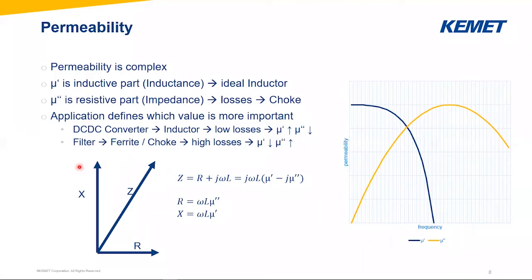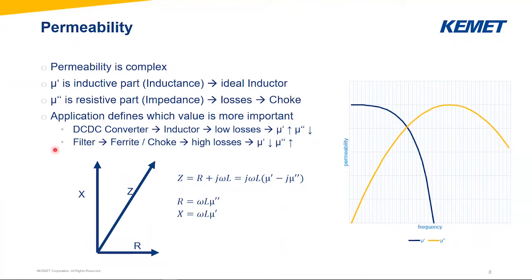This means depending on your application, you need to know your requirements. If you need a DC-DC converter inductor, you want low losses — µ' needs to be high and µ'' needs to be low. The opposite applies if you want a filter: you're looking for a ferrite or choke where you want high losses, meaning µ'' needs to be high. Today I want to focus only on the losses and choke behavior when the inductor is used as a filter, meaning µ'' needs to be high.